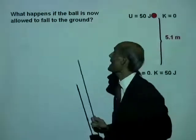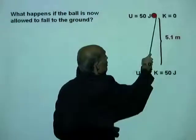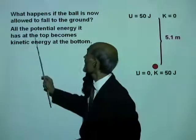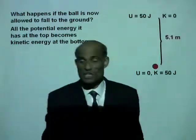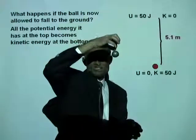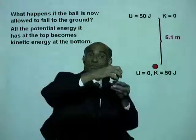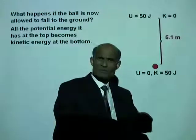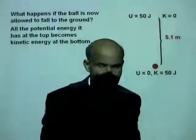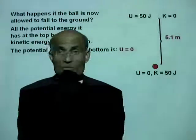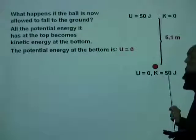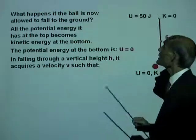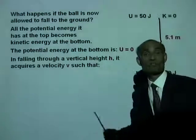What happens if the ball is now allowed to fall to the ground? All the potential energy it has at the top becomes kinetic energy at the bottom. The reason why this ball, when dropped on my foot, will do work on my foot is because all the potential energy becomes kinetic energy just before it hits the ground. At the ground, its kinetic energy is now 50 joules and its potential energy is zero. Therefore, the total energy is 50 plus zero, which is 50 joules.